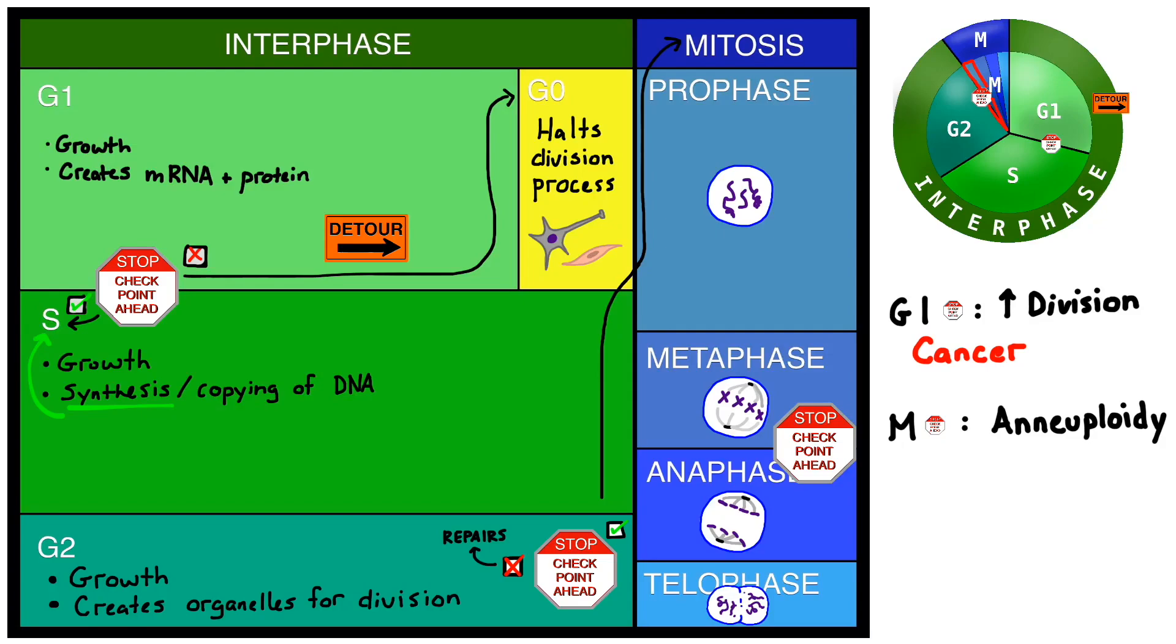If an error occurs at the M checkpoint rather than the G1 checkpoint, it results in aneuploidy. Let's imagine that the attachment of the spindle fibers during this step here didn't go correctly, and thus we wound up with too many chromosomes on the right-hand side of the cell during anaphase. This would lead to both daughter cells having an incorrect number of chromosomes. This is what causes Trisomy 21, also known as Down syndrome.